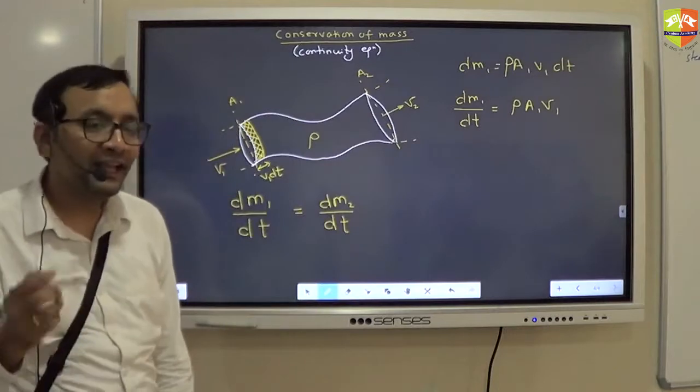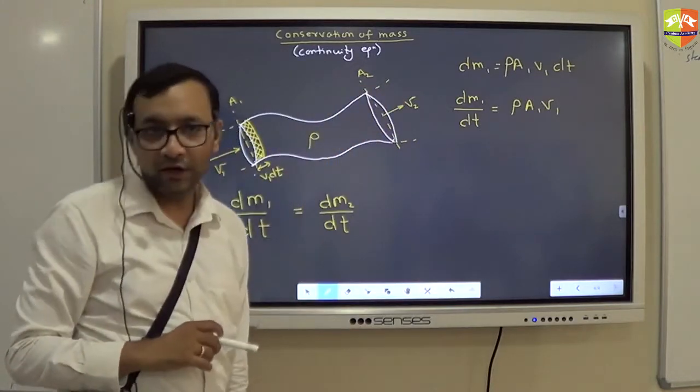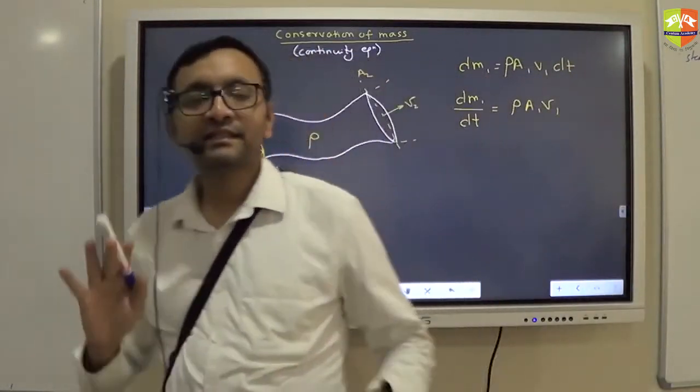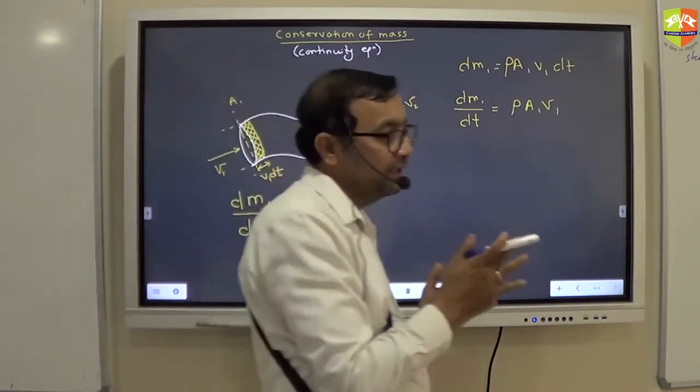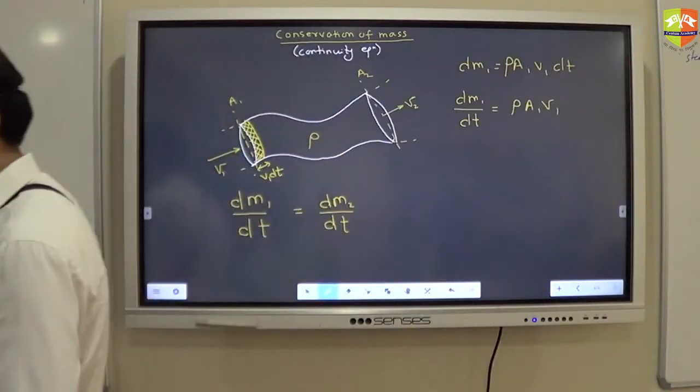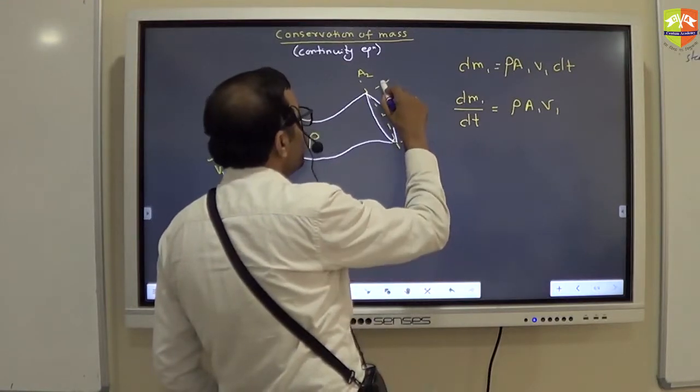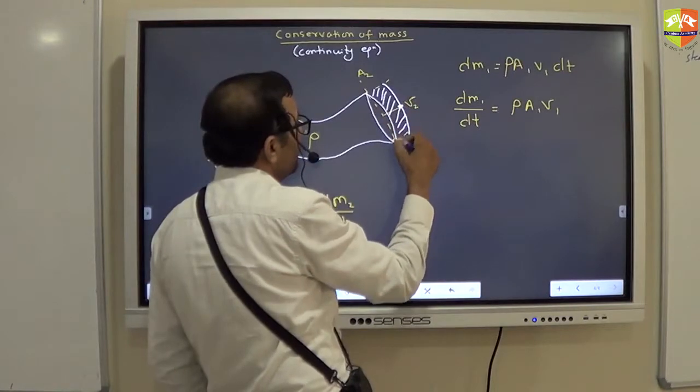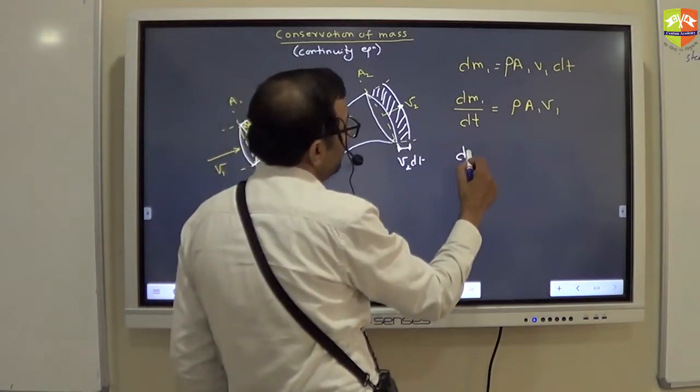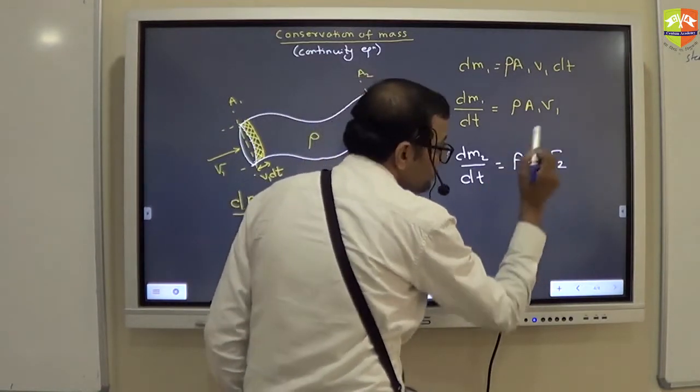By the way, I am assuming that the fluid is incompressible. Otherwise, density will not remain uniform. Non-viscous? No, non-viscous we are not assuming here right now. We are assuming that fluid is incompressible. Write down in the bracket that the assumption is fluid is incompressible. Density remains uniform. Same thing may not be valid for the air. Now, similarly, suppose V2 is the velocity here. Let's say it goes out. So, this much water will go out. So, this much distance will be V2 dt. The rate of water or the fluid that is coming out is rho into A2 into V2.